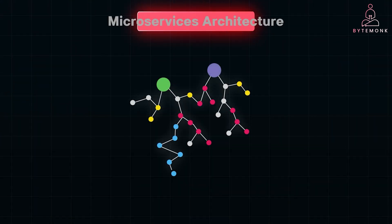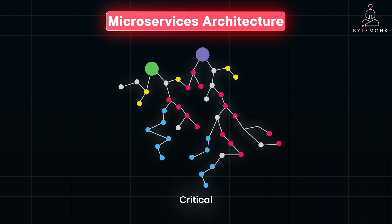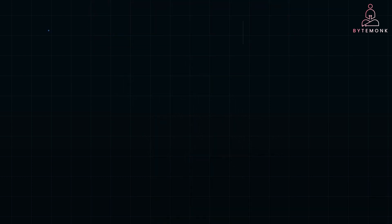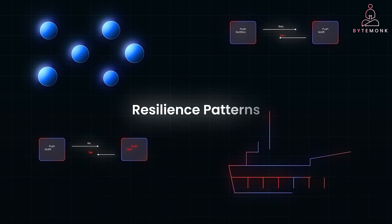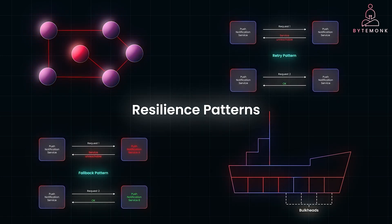In a microservices architecture, where you have dozens or even hundreds of services working together, ensuring resilience isn't just a nice-to-have — it's critical. When one service fails, it can cause a cascading failure that could bring the entire system down. But with the right resilience patterns in place, we can keep our systems running smoothly even when the unexpected happens.